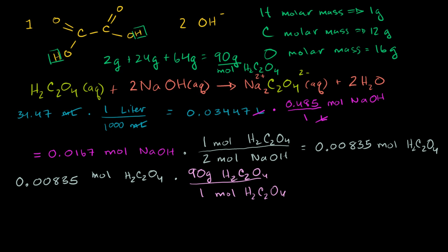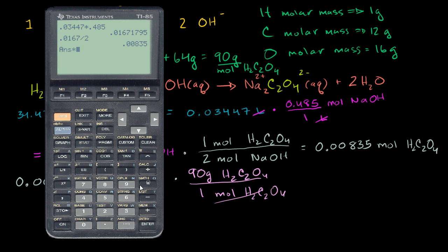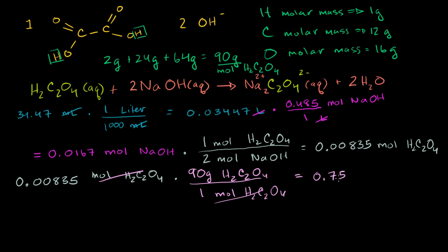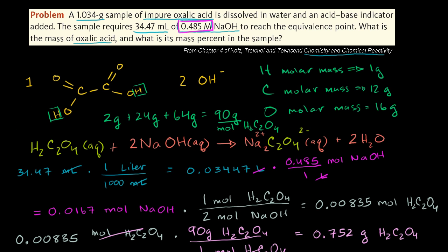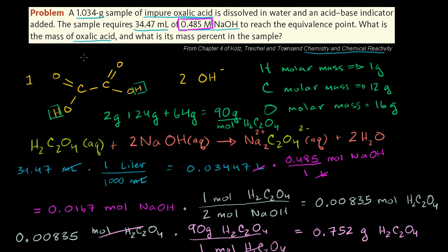Now we multiply the number of moles of oxalic acid by its molar mass. So 0.00835 moles times 90 grams per mole gives us 0.752 grams of oxalic acid, H2C2O4. That answers the first part of the question: the mass of oxalic acid is 0.752 grams.